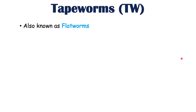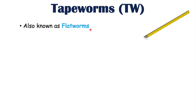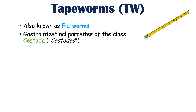Tapeworms are also known as flatworms, and the reason they are called flatworms is because they are flat in appearance. They actually look like a piece of tape or a measuring tape. They are gastrointestinal parasites of the class Cestoda and they can often be referred to as cestodes.